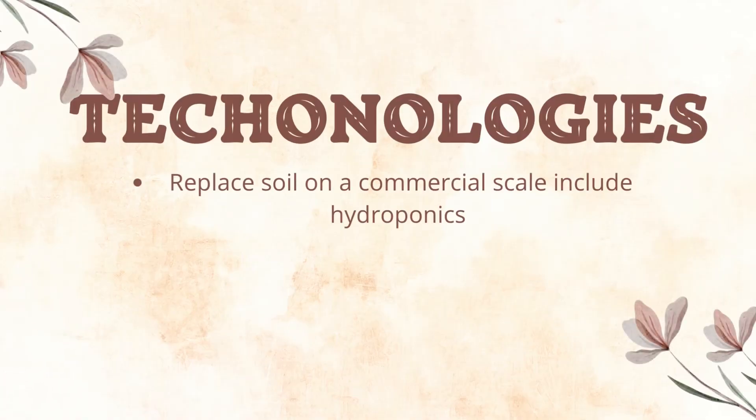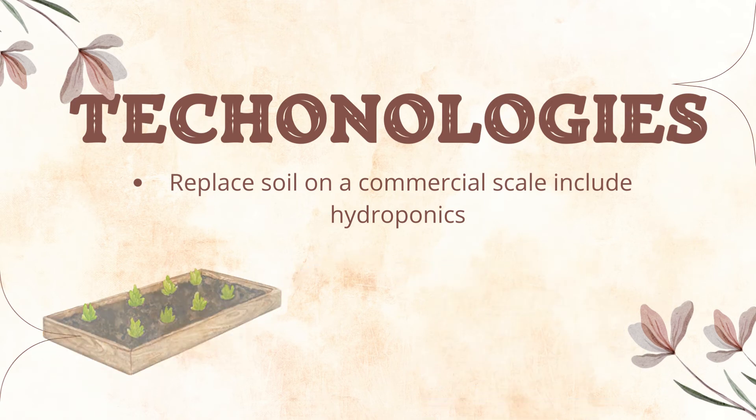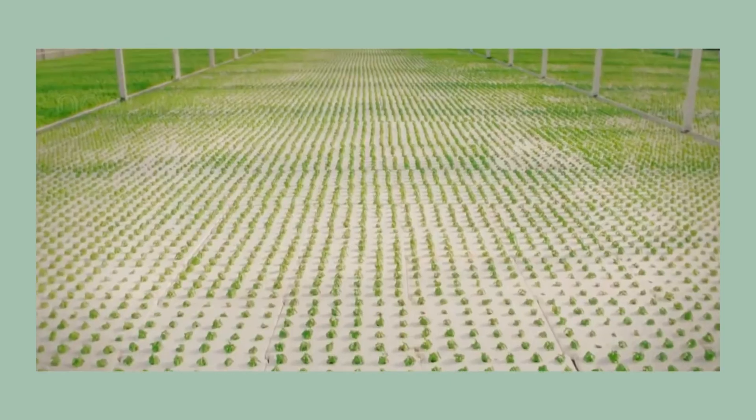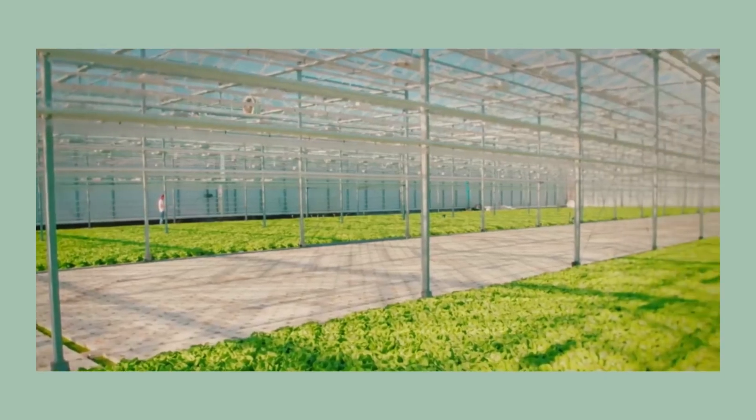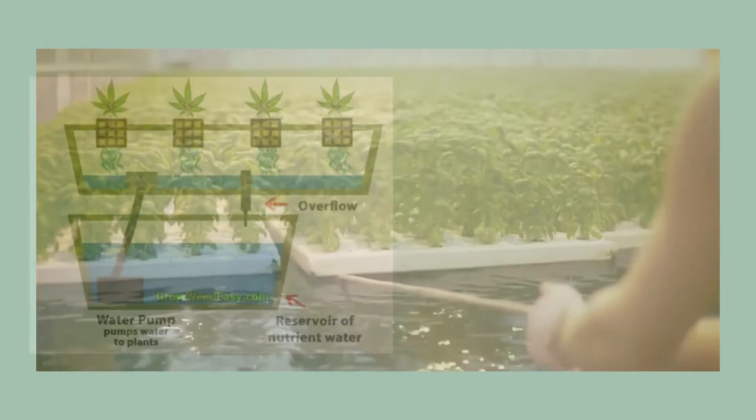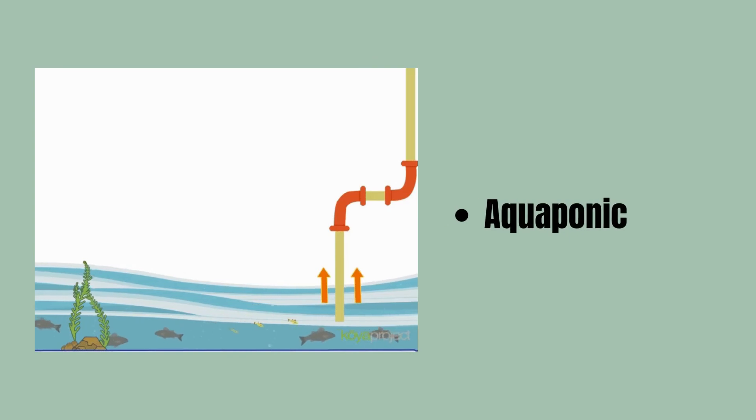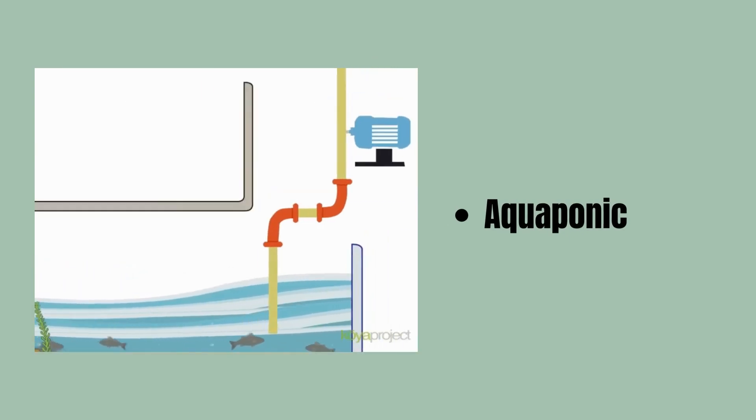Technologies that have the potential to replace soil on a commercial scale include hydroponics. Hydroponic crops are grown in inert substrates with nutrient solutions in water to be offered to the roots at comparative intervals or as a constant flow. The various types of hydroponics include ebb and flow, nutrient film technique and deep water culture, as well as aquaponics, which combines fish cultivation and crop growth into one closed process.